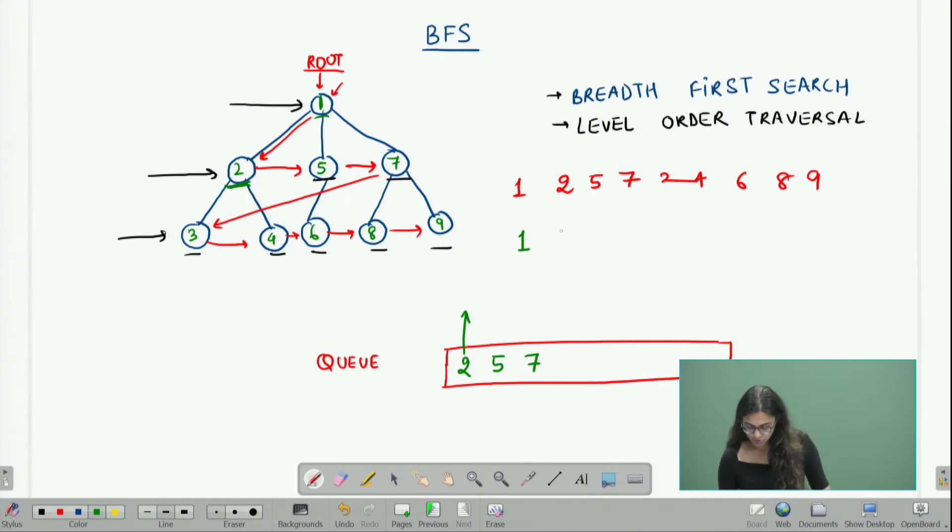Once I explore 2, I can print it and I know that I need to explore all its children but I need to explore them later, so I can push them in the queue. So I will explore 2, print 2, and push both of its children 3 and 4 into the queue.